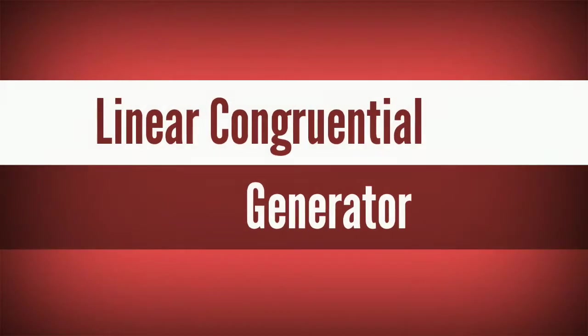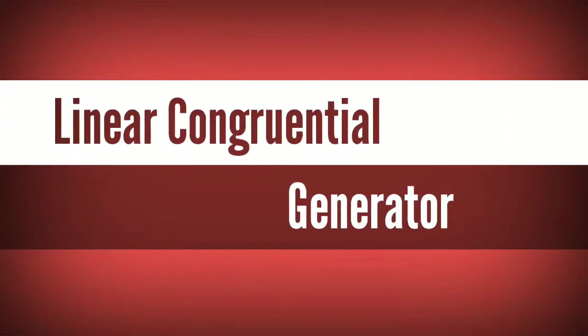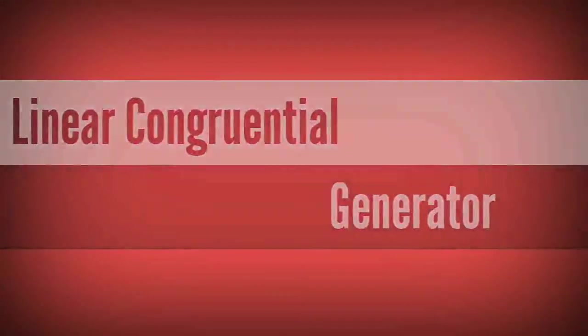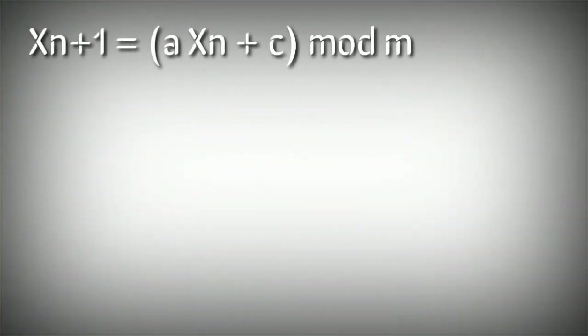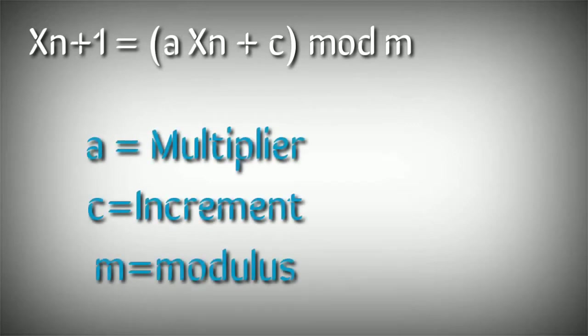Linear congruential generator LCG is the most common and oldest algorithm for generating pseudo random numbers. So this is the formula of LCG method. Here A is the multiplier, C is the increment and M is the modulus.